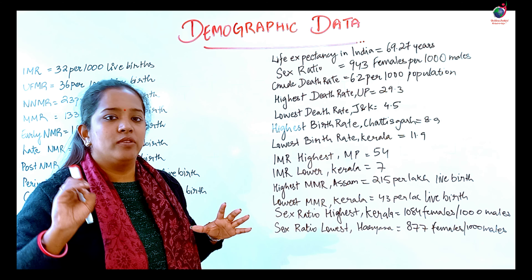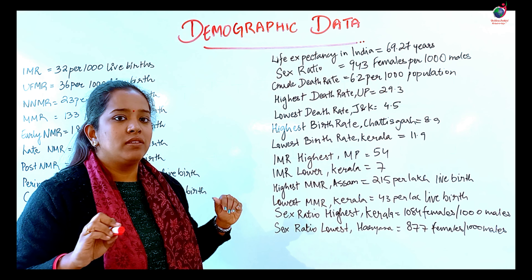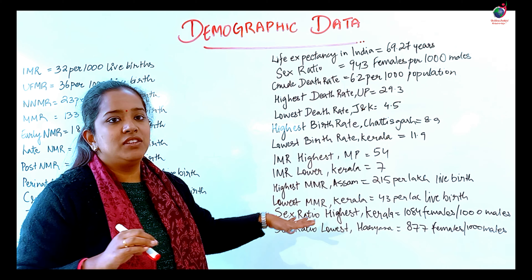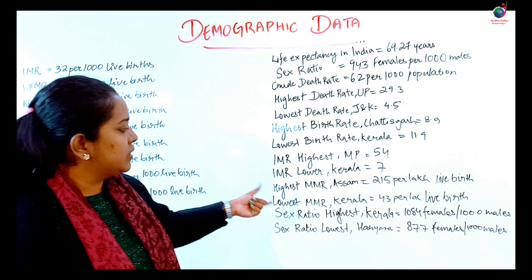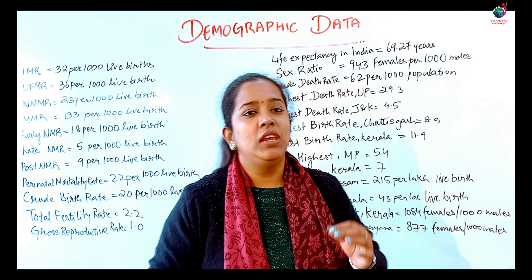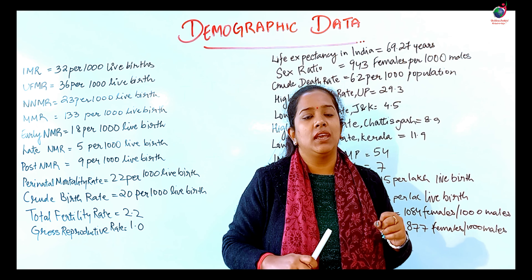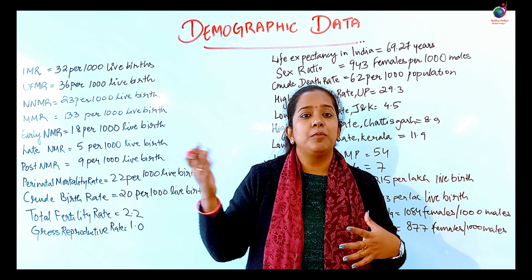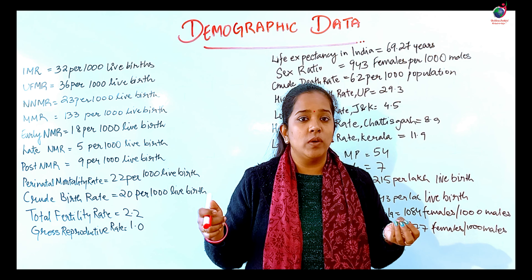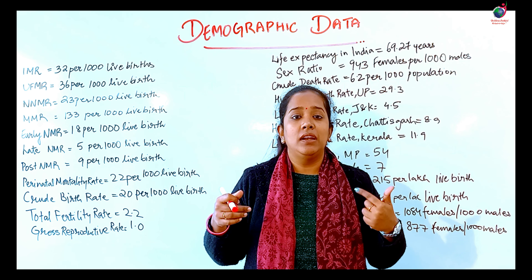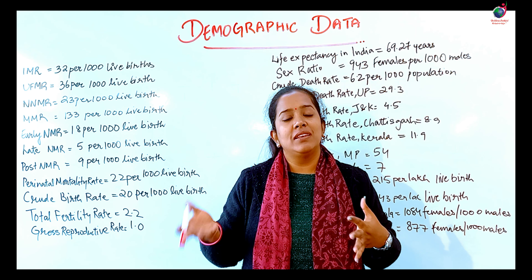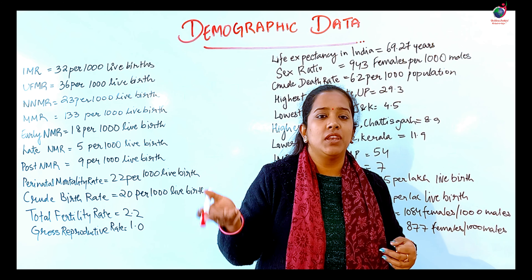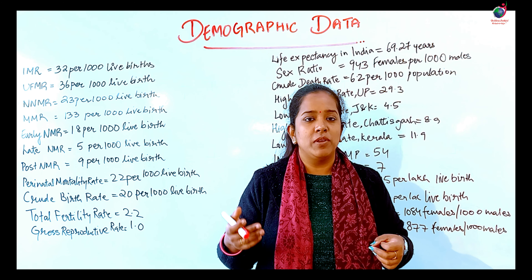The lowest sex ratio is in Haryana, at 877 females per 1,000 males. These are some commonly occurring questions regarding infant mortality rates, maternal mortality rates — which state has the highest or lowest — where birth rates and death rates are highest or lowest, and what the sex ratio is and where it is highest. These questions are often asked in objective format, so I hope you understood this topic.